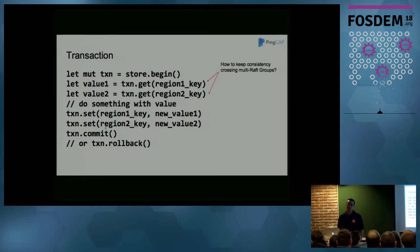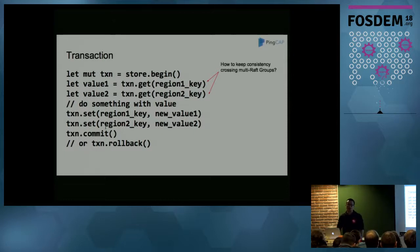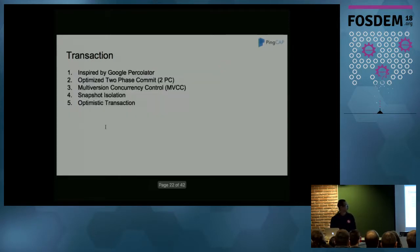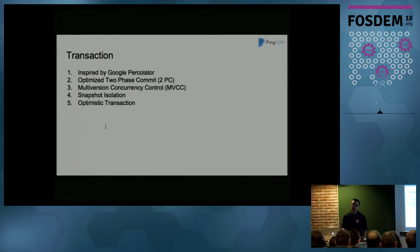Now we have multi-Raft to support horizontal scalability, but another problem is distributed transactions. For example, in a bank transfer, if you want to transfer money from account A to account B, but A and B may be on different nodes in different multi-Raft groups, we need to keep data consistency across multiple nodes and Raft groups. We can use the traditional two-phase commit (2PC). Here we use an optimized 2PC inspired by Google Percolator, which has multi-version concurrency control (MVCC) and supports optimistic transactions. I won't go into more detail here — you can search the Percolator paper to learn more.